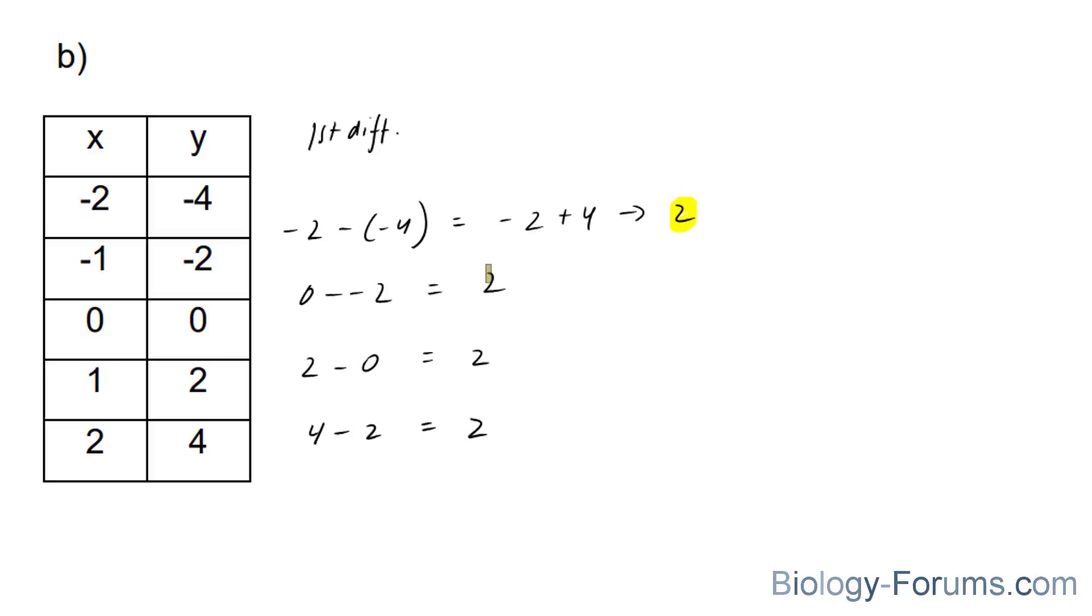Notice that the first differences are all the same. Therefore, this table of values represents a straight line. Now, also, since they're the same, you do not need to find the second differences, because it will result in a column of zeros.